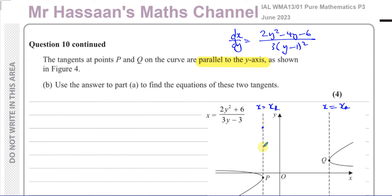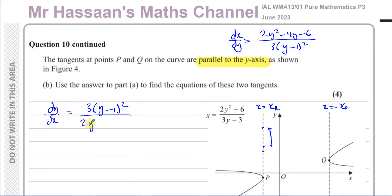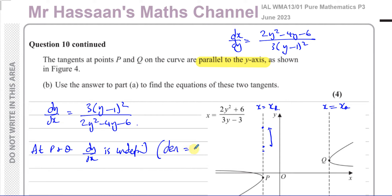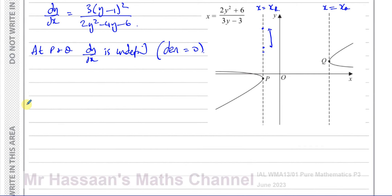If we try to find the gradient between two points on a vertical line, they share the same x-coordinate, so the change in x is zero, making the denominator of the gradient zero — hence undefined. We can rewrite dx/dy as its reciprocal dy/dx, which equals 3(y minus 1) squared over 2y squared minus 4y minus 6. At P and Q, dy/dx is undefined, which occurs when the denominator equals zero.